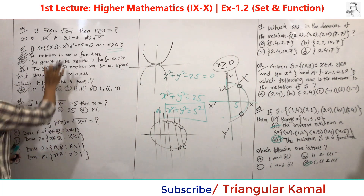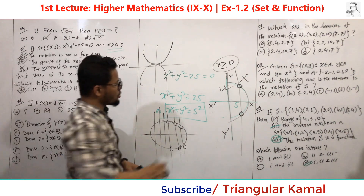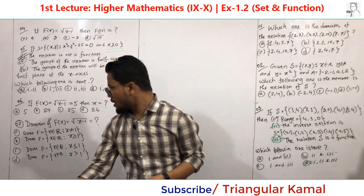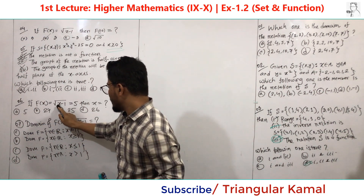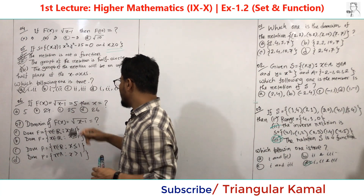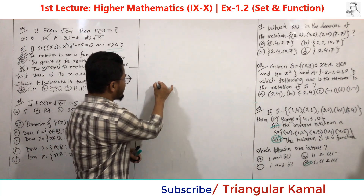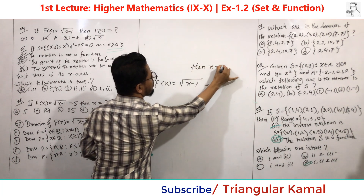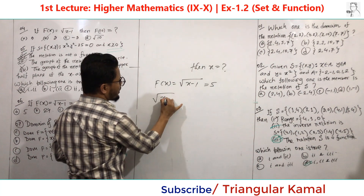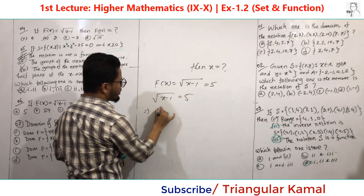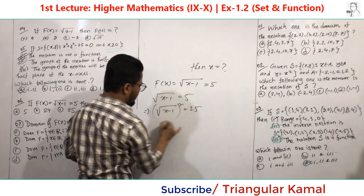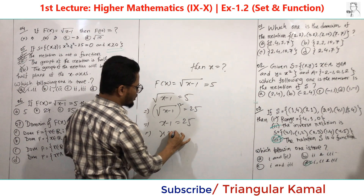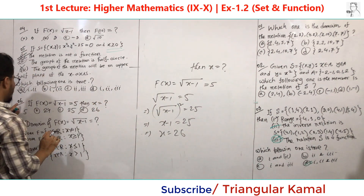Number six is similar to number four. If f(x) = √(x-1) = 5, find x. Setting √(x-1) = 5 and squaring both sides gives x - 1 = 25, so x = 26. The answer is option D.